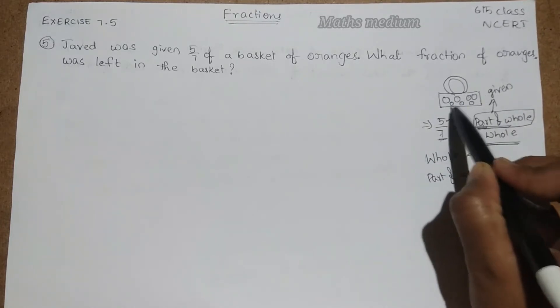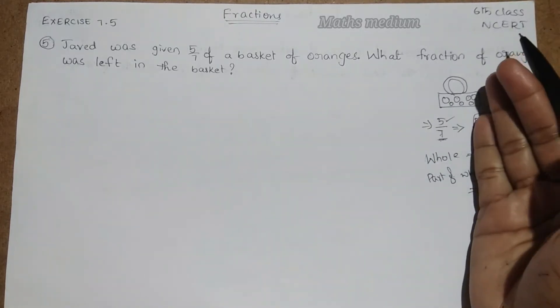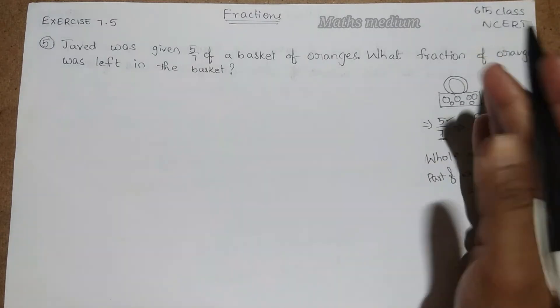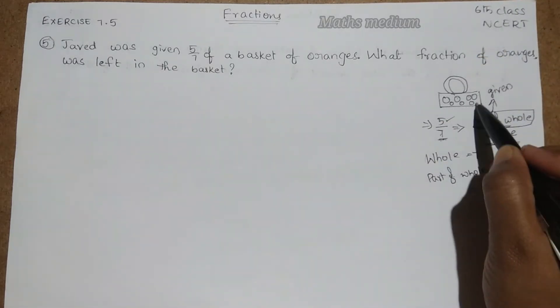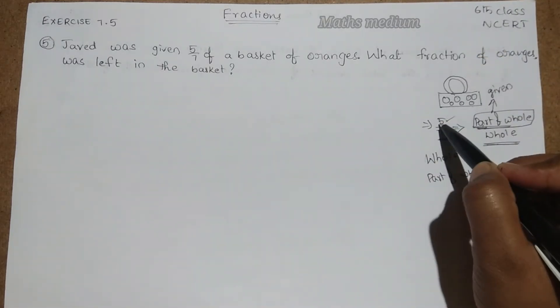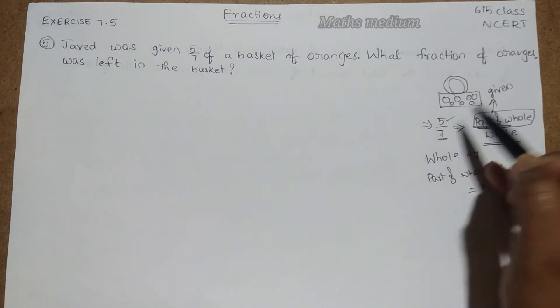See here 1, 2, 3, 4, 5, 6, 7. So 7 oranges are there. In that 5 by 7, in the 7 oranges, they gave 5 out of the 7 oranges to his friend. So this is the answer here.